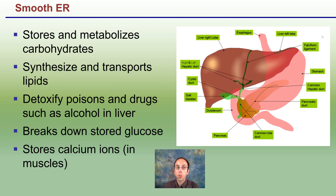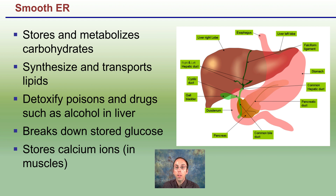The liver is a very important filter and contains a lot of smooth ER. The smooth ER can break down stored glucose and also helps store calcium ions in muscle cells. This smooth ER is found in many types of cells and performs a lot of vital functions for the cell.